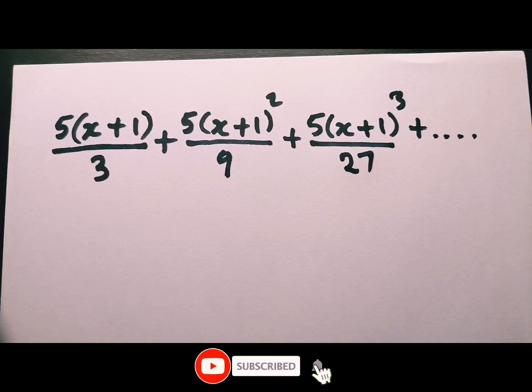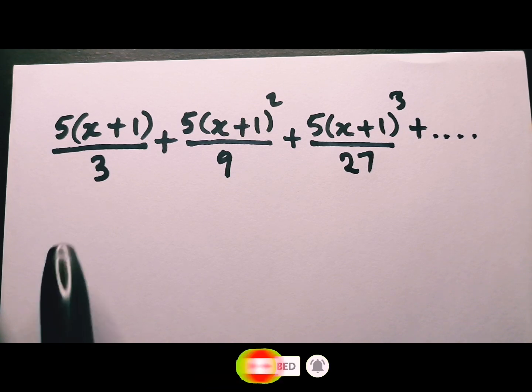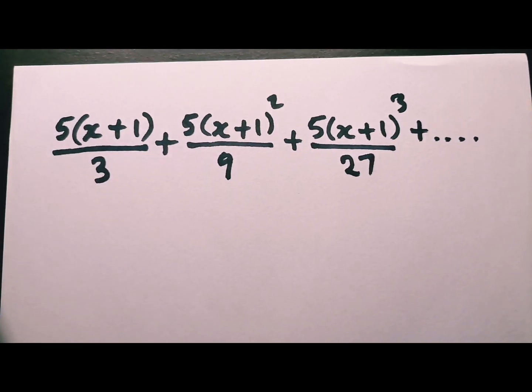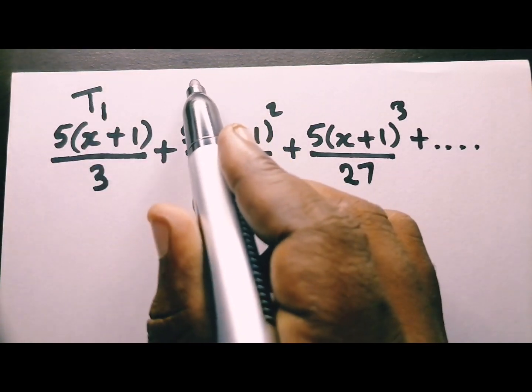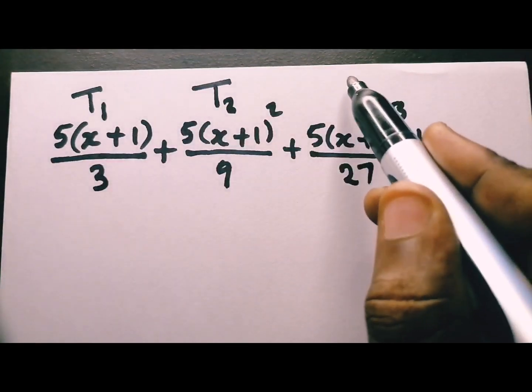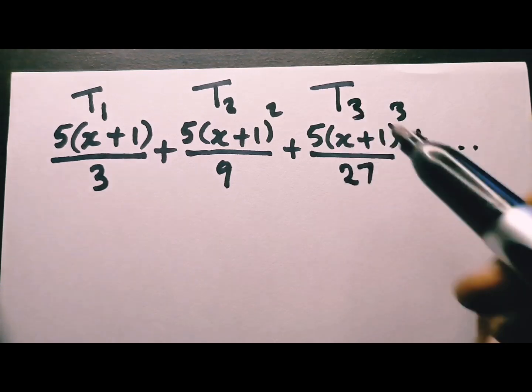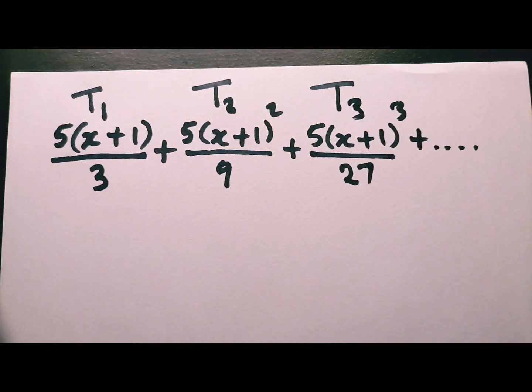In this question 3, they say a convergent geometric series is given by these terms. Remember, this is term 1, this is term 2, and this is term 3. It's very important to know that.